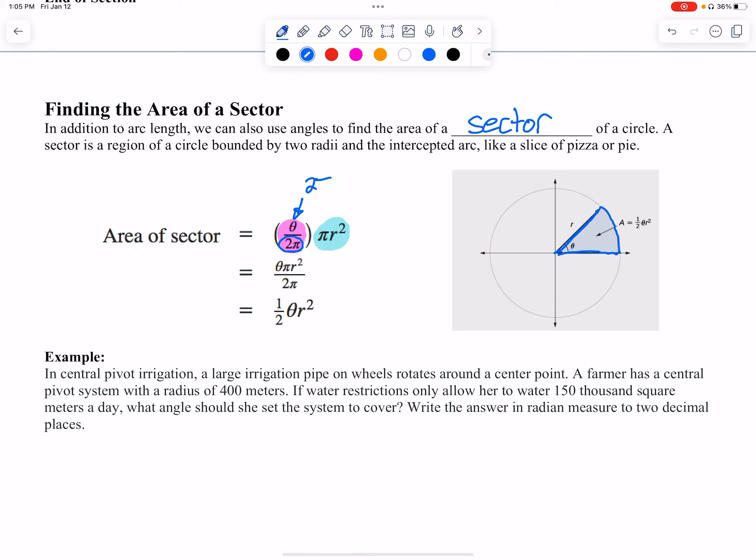This is the angle telling me how much of my sector I want. So if I wanted the whole circle, I could put a 2π there and that would cancel out giving me πr². But this is the angle in question, the theta, so it tells me how much of my circle I need.